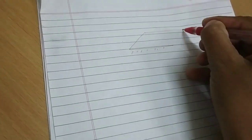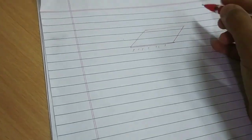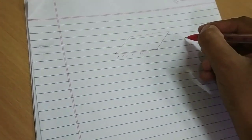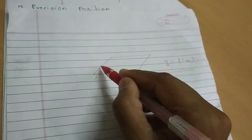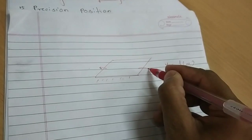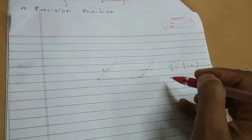Now suppose we have the 4 bar mechanism and we can say that it is a function generation, that means y is equal to f of x. What does it mean? When x is the angular position of input link and y is the position of output link.